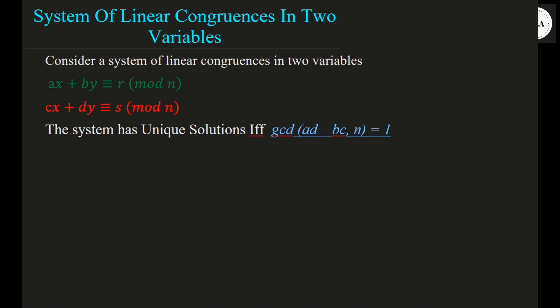We say these two equations have a unique solution. What is the condition to be satisfied? If and only if gcd of (ad minus bc, n) is equal to 1 — meaning ad minus bc and n should be relatively prime numbers.